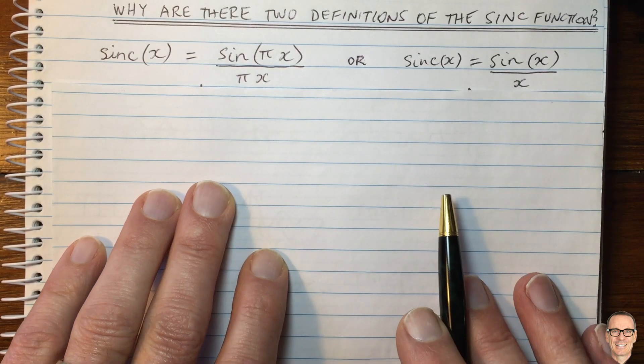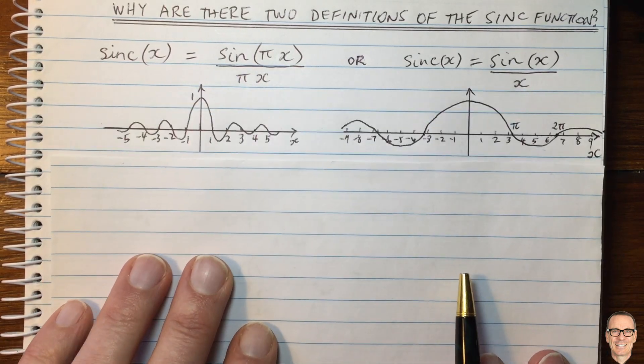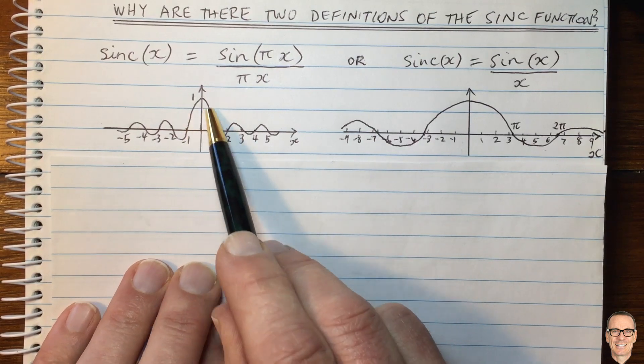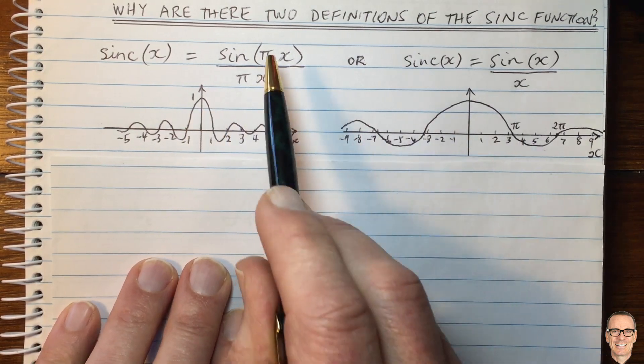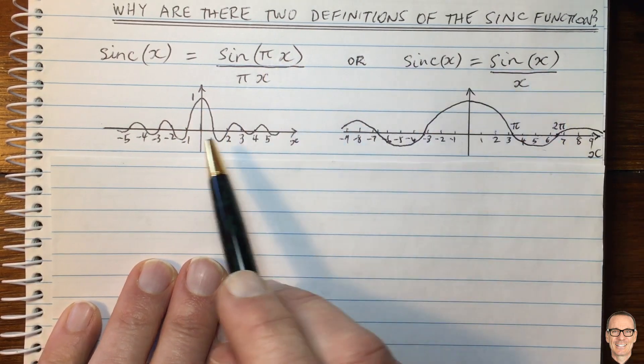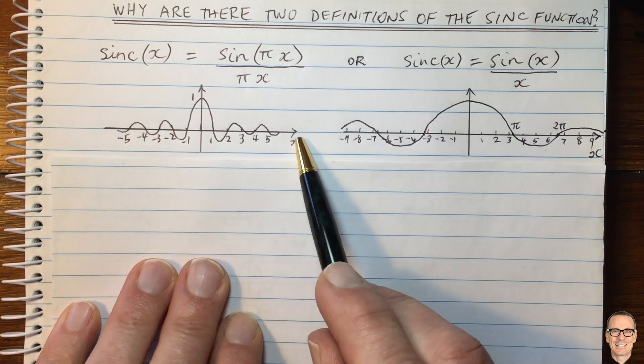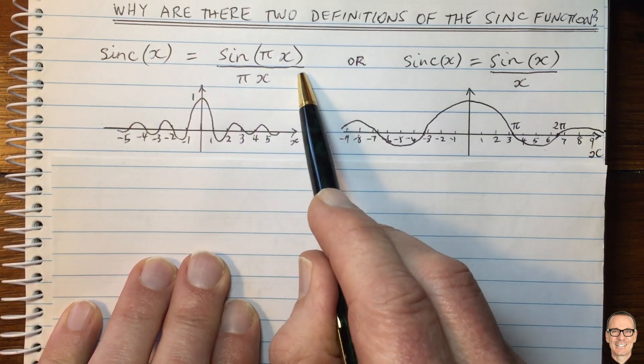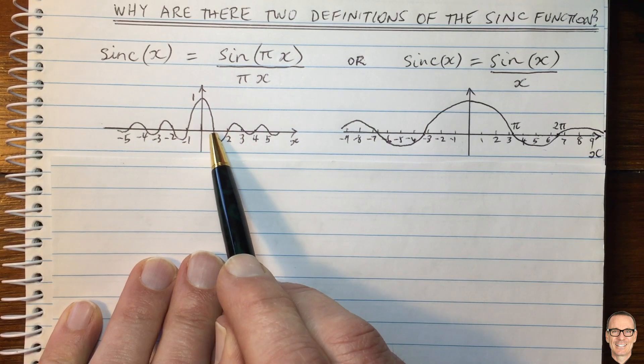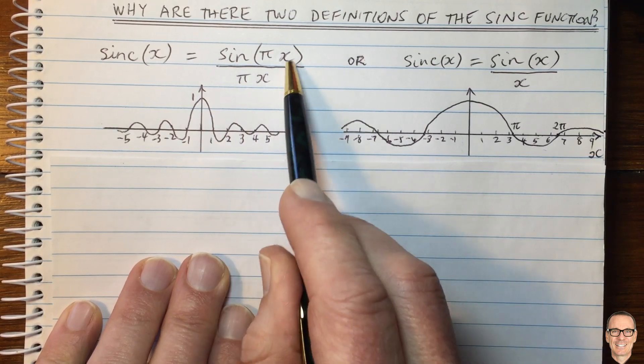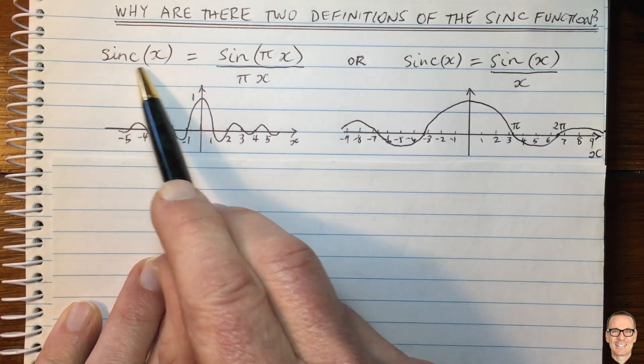Let's look at these two different functions. Well, I've plotted them here. Of course, they both have the sinc shape. And as you can see, it's just a scaling in the horizontal direction. So this one on the left here, the crossings occur at integer values of x for this definition of sinc.